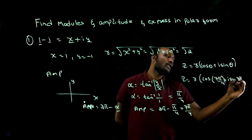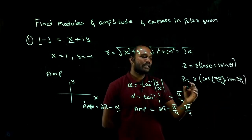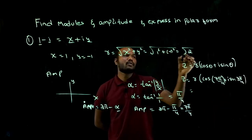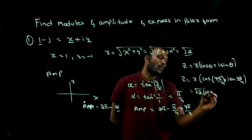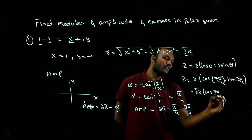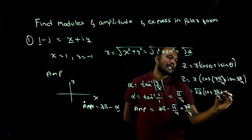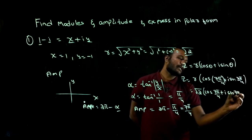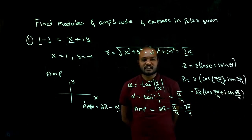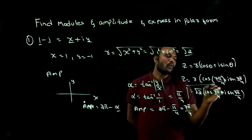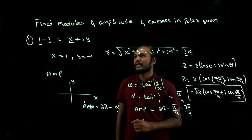Now we replace r with root 2. So root 2 times cos of 7π upon 4 plus i times sine 7π upon 4. This is the polar form of the given question.